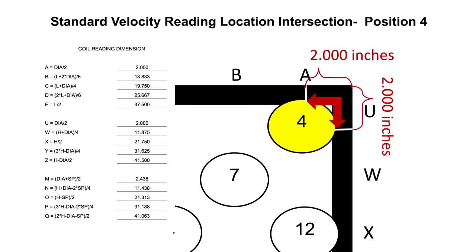Use this method referencing the coil reading dimensions for each standard velocity reading location. For position 4, a measurement and marking for A is 2 inches from the right towards the center, and for U, 2 inches from the top towards the bottom. Therefore, the position 4 standard velocity reading location is at the intersection of A, 2 inches from the right to center, and U, 2 inches from top to bottom.